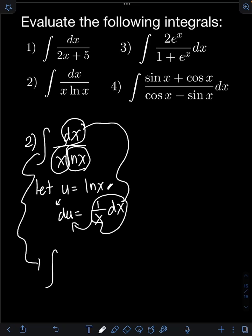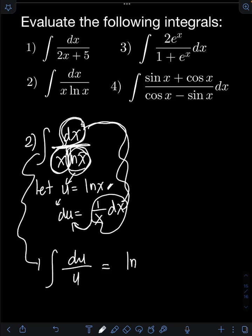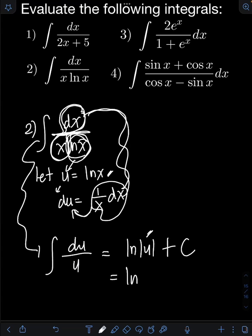If we substitute, we will have the integral of: dx over x equals du, over ln x, which equals u. We again have the integral of du over u yielding a natural logarithm: ln of the absolute value of u plus C. Transforming back, u equals ln x, so the final answer is ln of the absolute value of ln x, plus C.